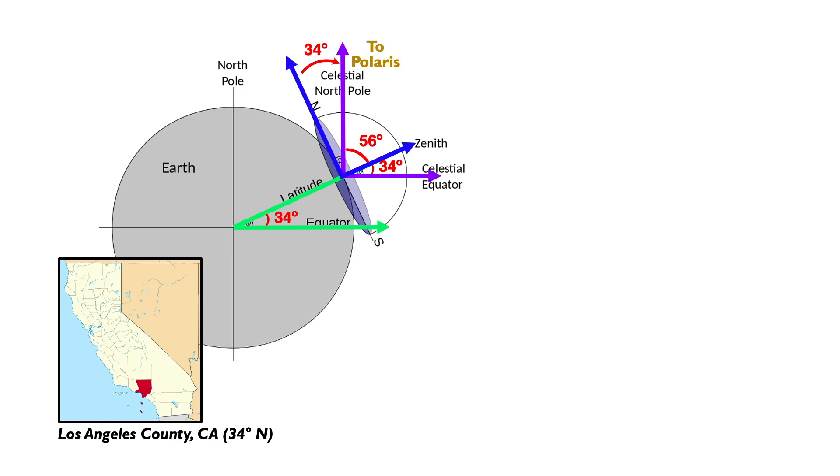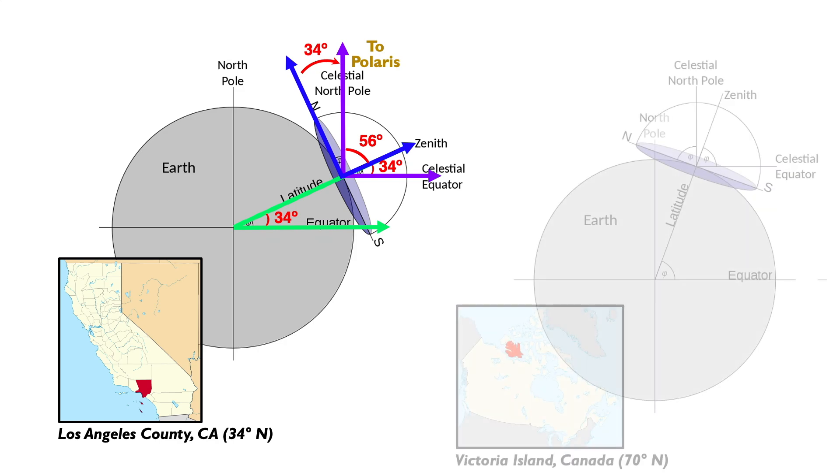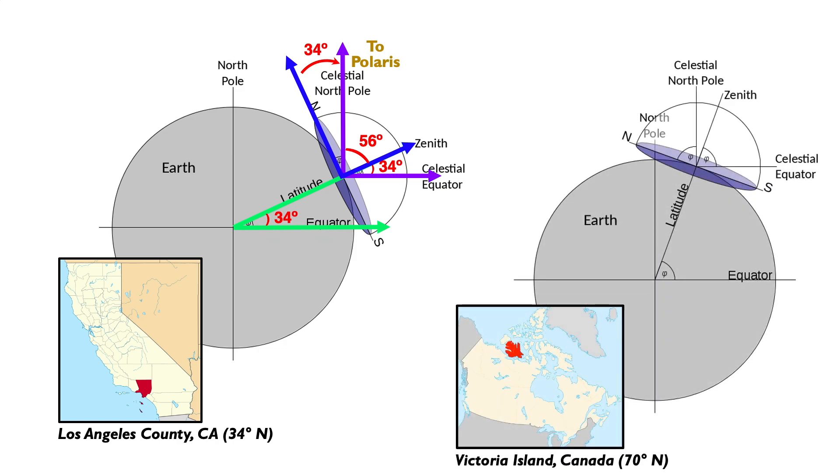Now that was quite an adventure in geometry, so let's do it again. This time we'll start further north, way up north in the northwest territory of Canada on Victoria Island, where the latitude is 70 degrees above the Earth's equator.